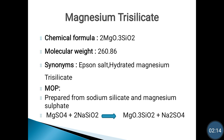A small amount of magnesium ion is also absorbed, which is excreted by the kidneys. So we will finish magnesium carbonate and then move to the next compound — magnesium trisilicate.